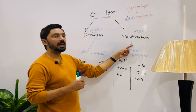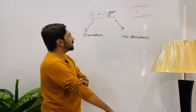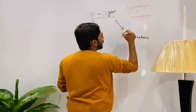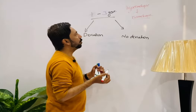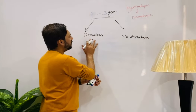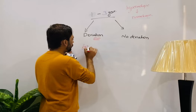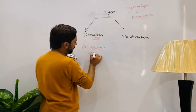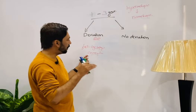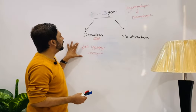Now let's discuss the next age group — one to three years — with isometropic hypermetropia. If hypermetropia is present and the refraction is the same in both eyes, and there is deviation — for example, esotropia — and the deviation is esotropia, we will prescribe full cycloplegic correction. We instill cyclopentolate drops, paralyze accommodation, and prescribe the full correction in spectacles.